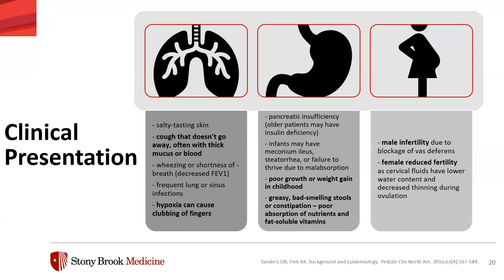Moving on to signs and symptoms. A patient with cystic fibrosis could present with a cough that doesn't go away, often with thick mucus or blood, wheezing or shortness of breath, and a decreased FEV1 — forced expiratory volume, measuring how much air a person can exhale during a forced breath. There can also be hypoxia leading to clubbing of the fingers. In children, poor growth or poor weight gain, and greasy or bad-smelling stools due to poor absorption of nutrients and fat-soluble vitamins.